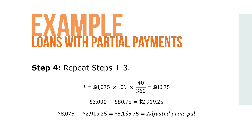A second partial payment of $3,000 was made on day 70. We now repeat Steps 1, 2, and 3 to credit the second partial payment properly. Remember, use the adjusted principal and 40 days — 70 minus 30 equals 40 — for this calculation. So I equals $8,075 times 0.09 times 40 over 360, which is $80.75 of interest.